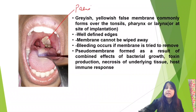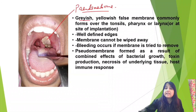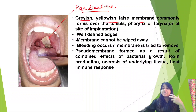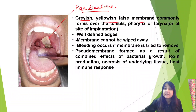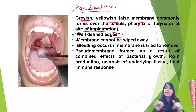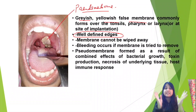The pseudomembrane is a grayish-yellowish false membrane which forms over the tonsils, pharynx, or larynx. It can form over anything. It has well-defined, well-circumscribed edges.